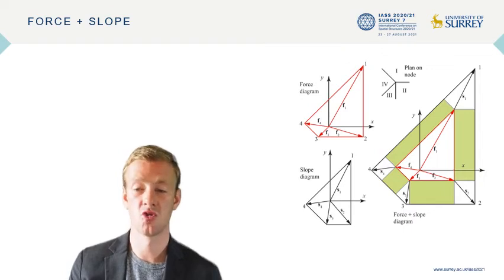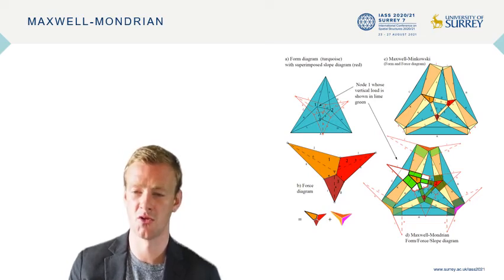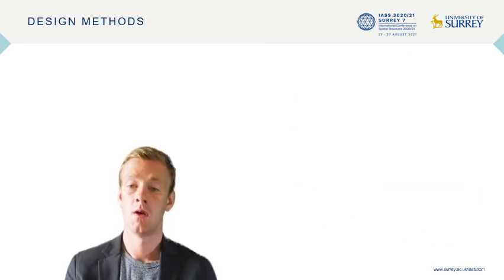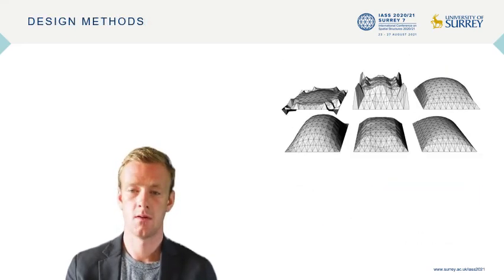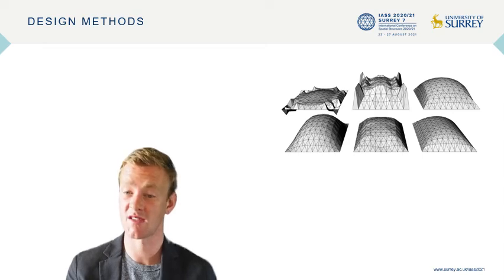One can draw the mixed area for a node as shown in green. One can also combine the form, force, and slope diagrams into a combined Maxwell-Mondrian diagram which describes the equilibrium of the grid shell. All of this can be powerful in the design of grid shells — by considering the grid shell and airy stress function simultaneously, one can design both forces and geometry as desired.